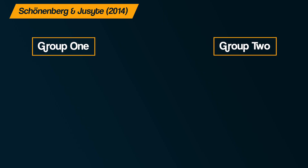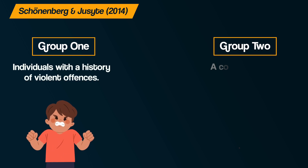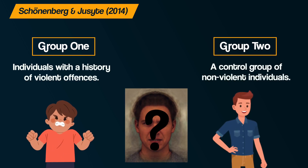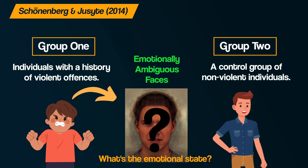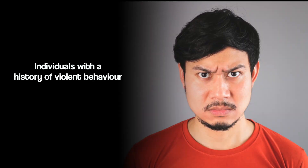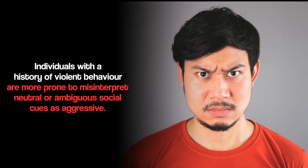Offenders with hostile attribution bias often believe their violent or aggressive behavior was caused by someone else's actions. Instead of feeling guilt or shame, they rationalize the offense by blaming the other person, which helps them maintain a positive view of themselves. One study investigated this by showing two groups — violent offenders and a non-violent control group — emotionally ambiguous facial expressions and asking them to identify the emotional state.